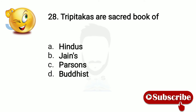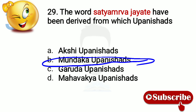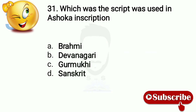Question 27: Tripitakas are the sacred books of Buddha. Question 28: The words Satyameva Jayate have been derived from which Upanishad? Mundaka Upanishad. Question 29: The Upanishads are the source of Hindu philosophy. Question 30: Which script was used in Ashoka's inscriptions? Option number A, Brahmi.